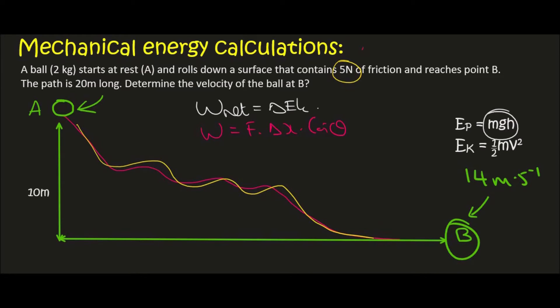The reason for that is that the force of friction is always going to be 5. It's not going to change depending on how steep or how gradual the slope is. And so we know that the object has 196 joules of energy at A. We now need to work out how much energy is lost due to friction.